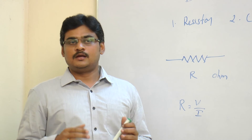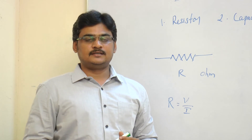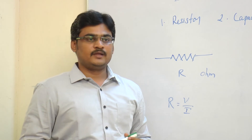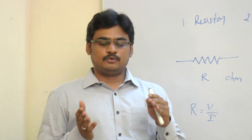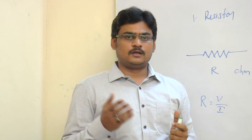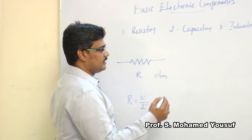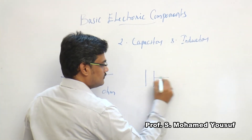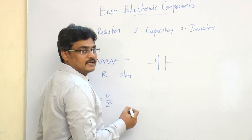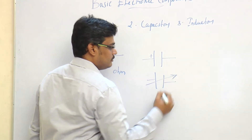The next electronic component is the capacitor, which has the property of storing energy in the form of electric charge. It is made of two plates separated by dielectric materials like glass, mica, dry air, or plastic to store the electric charge. It is graphically represented as shown — here is a non-polarized capacitor, here is a symbol of a polarized capacitor, and here is a symbol of a variable capacitor.